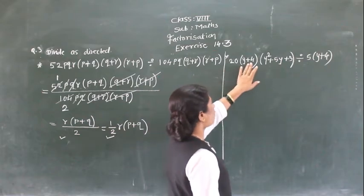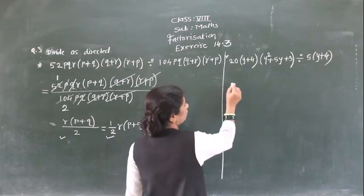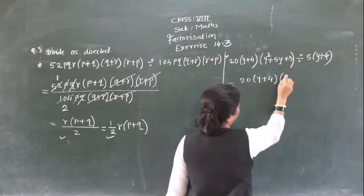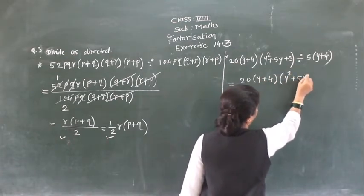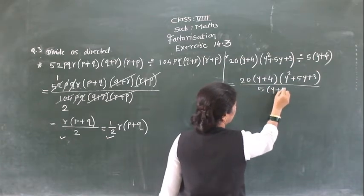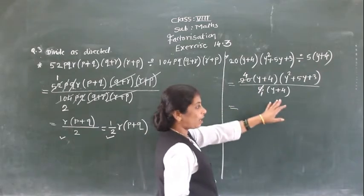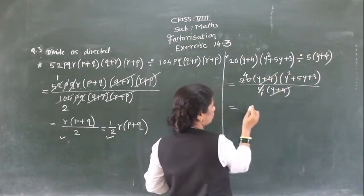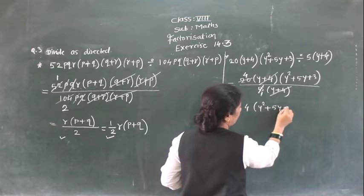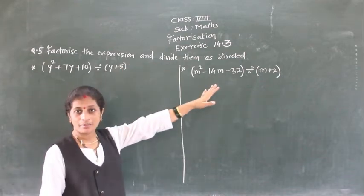Now next: 20(y+4)(y²+5y+3) divided by 5(y+4). So here 20(y+4)(y²+5y+3) divided by 5(y+4). Factor the expression: (y+4) gets cancelled, so what is remaining: 4(y²+5y+3). Factor the expression and divide directly.